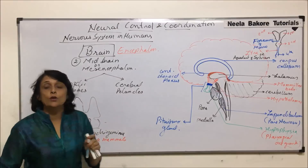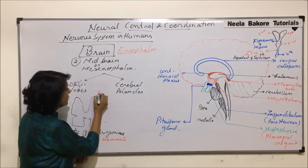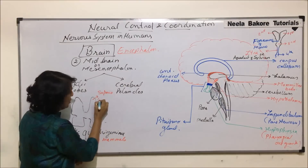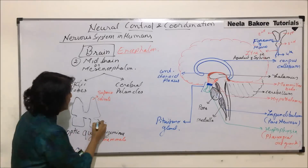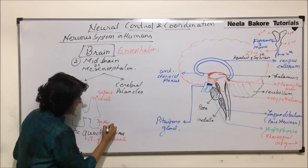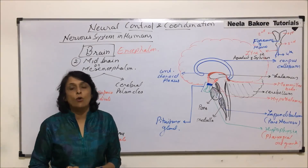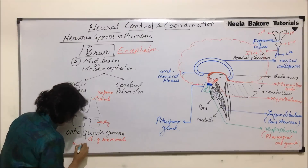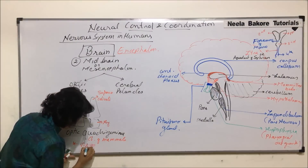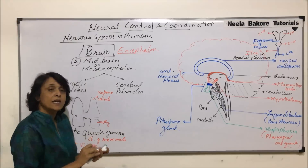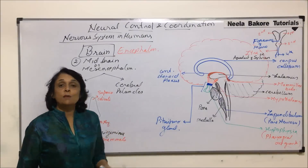There are four lobes — the upper ones are bigger and they are known as superior colliculi, and the lower ones are the inferior colliculi. As the name tells us, optic quadrigemina's main role is in vision, so the optic lobes help in vision.